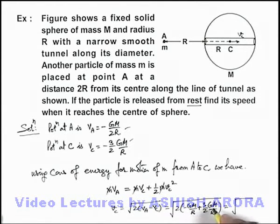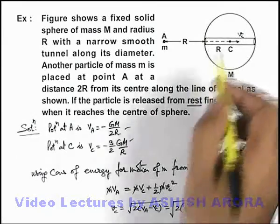So it is GM by R. Finally, the result we're getting is root of 2GM by R. That will be the answer to this question, that is the speed of the particle when it is crossing point C.